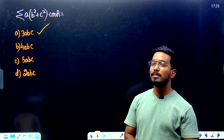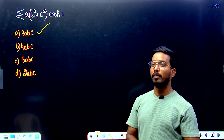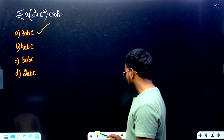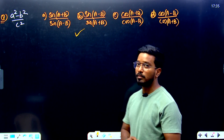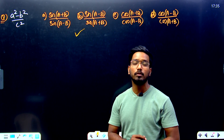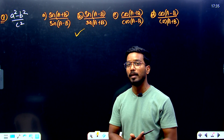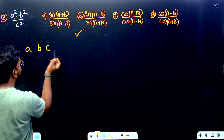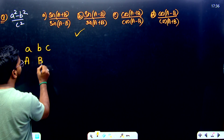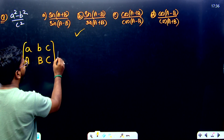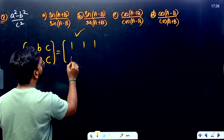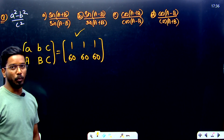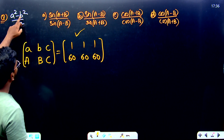Now, how did we solve that within three seconds? The trick is the equilateral triangle method. This question is of the equilateral triangle type. In an equilateral triangle, all sides a, b, c are equal, and all angles are also equal. We assume sides as 1, 1, 1 and angles as 60°, 60°, 60°. This is the one basic trick you need to memorize.